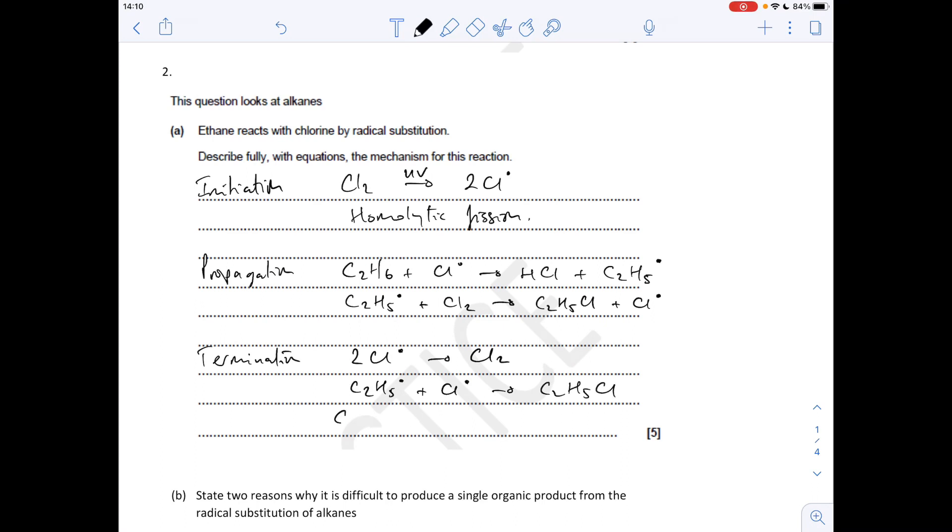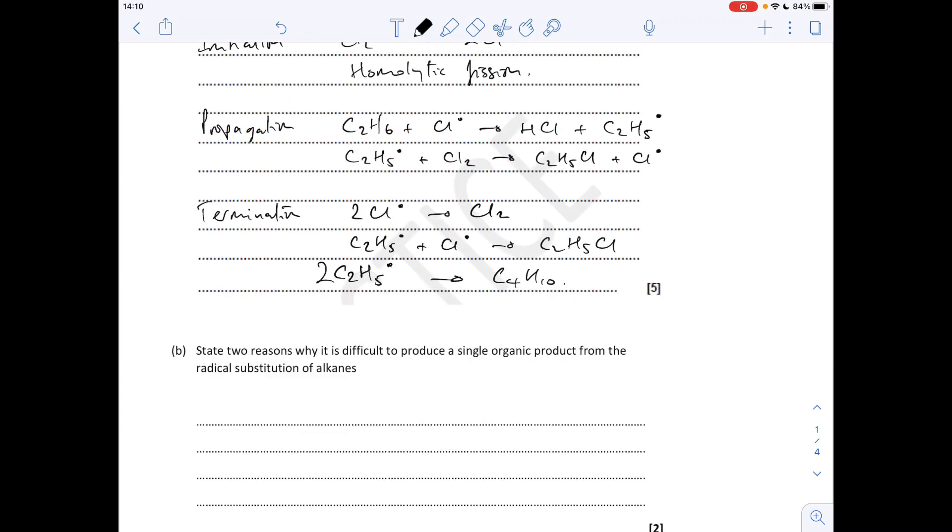You could have a C2H5 radical and a chlorine radical, and that will give you C2H5Cl. You could even take two C2H5 radicals and you could make butane C4H10. Part B: state two reasons why it's difficult to produce a single organic product from this reaction. Basically, substitution can occur anywhere on the carbon chain.